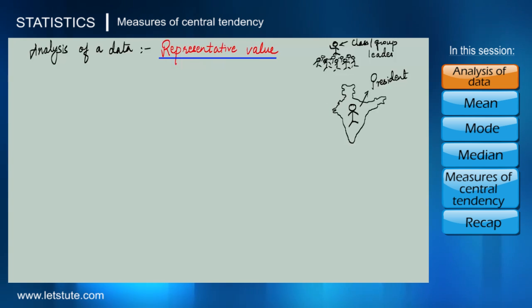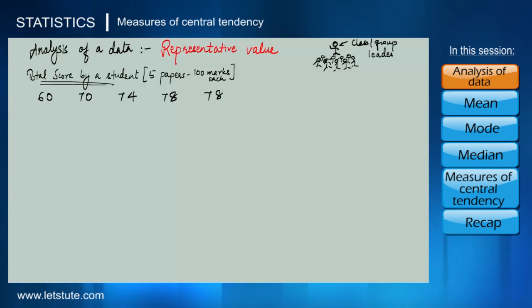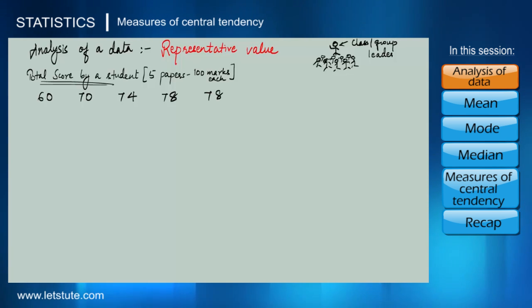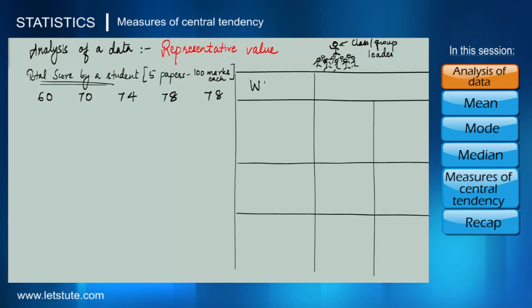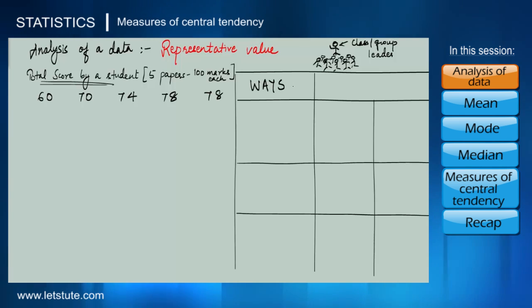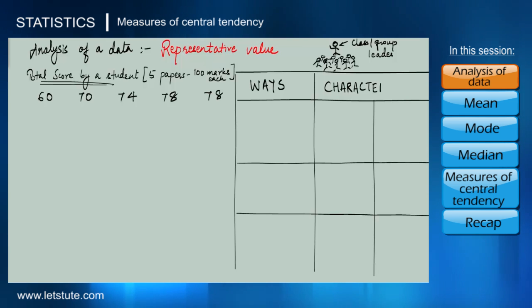Here is data about the total score secured by a student in five papers, and each paper was out of 100 marks. The real question is: which among these data values can we consider the representative value? Statistics provides us with many methods — we will learn all those methods one by one and see their characteristics.